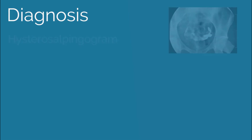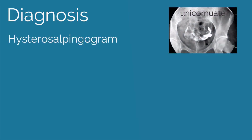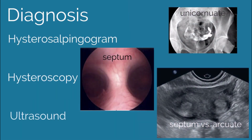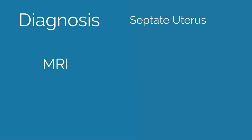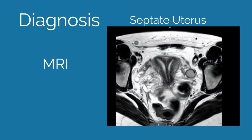How do we diagnose Müllerian anomalies? Surgery can diagnose Müllerian anomalies, but imaging modalities such as hysterosalpingogram, hysteroscopy, and ultrasound are helpful and less invasive. However, these modalities can miss some anomalies, including in our patient. MRI is still considered the gold standard. This MRI image demonstrates a septate uterus.